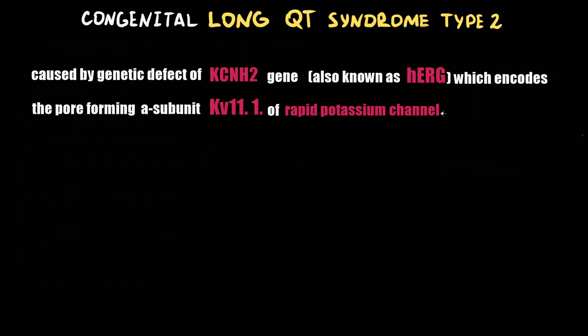Congenital long QT syndrome type 2 is caused by a genetic defect of the KCNH2 gene, also known as HERG, which encodes the pore-forming alpha subunit of the KV11.1 protein of the rapid potassium channel.